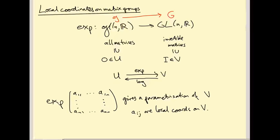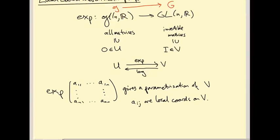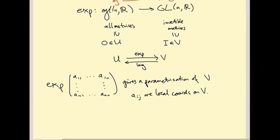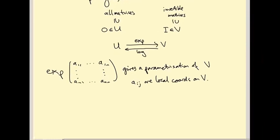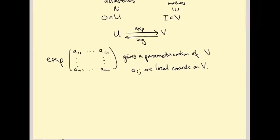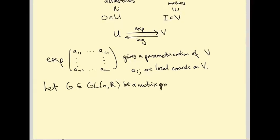So let's justify that this is true — and it is true, though it takes a bit of work. Let G inside GL_n(R) be a matrix group, meaning a topologically closed subgroup of GL_n(R), and let little g be its Lie algebra.